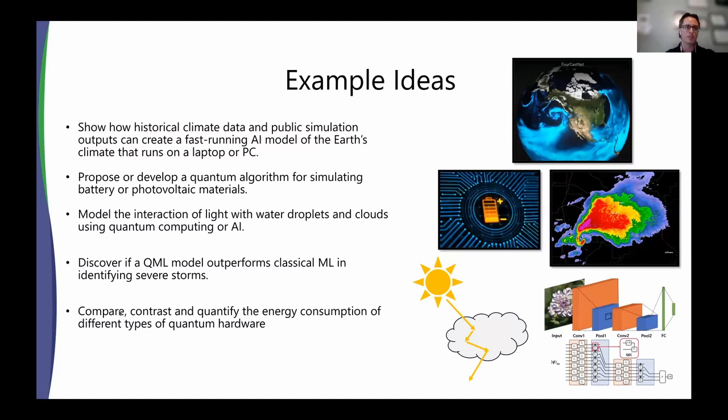On the side of quantum machine learning, discover if quantum machine learning algorithms perform or outperform classical machine learning in identifying severe storms. So like in this picture here of a radar image of a tornado, you can use machine learning to identify these on radar to provide early warning against those. So does a quantum machine learning algorithm provide any benefit to something like that?